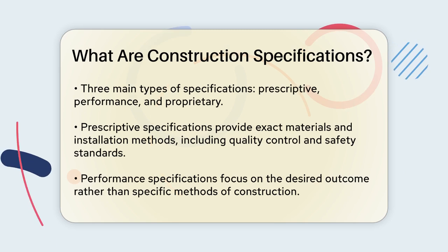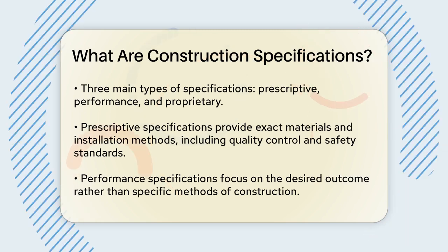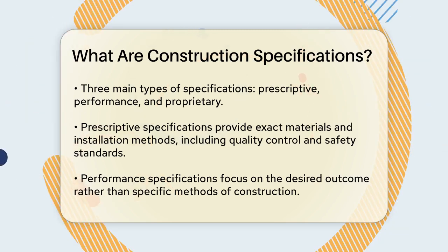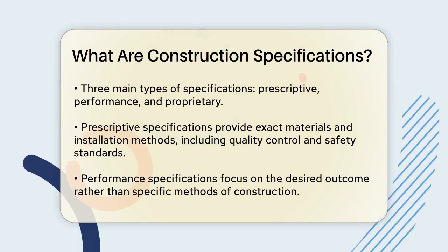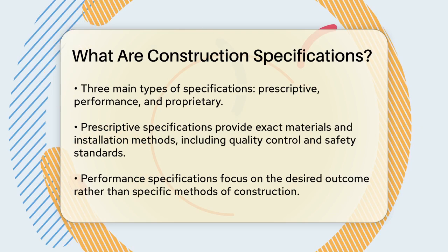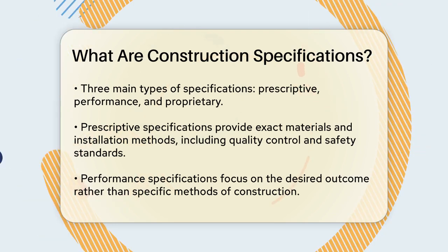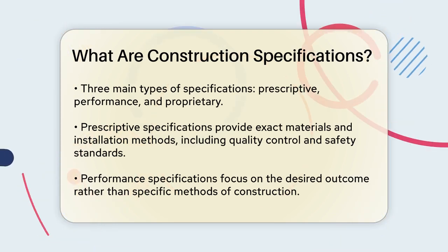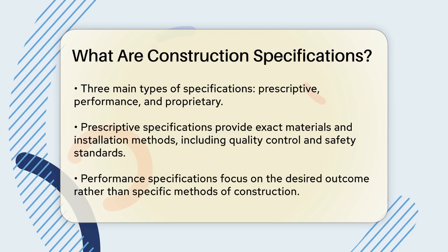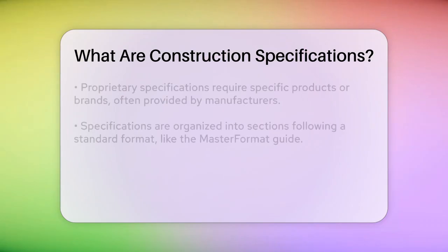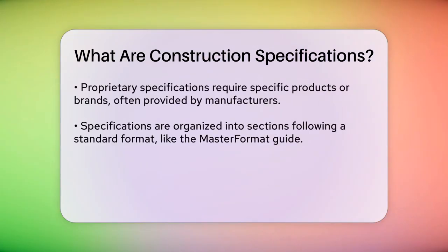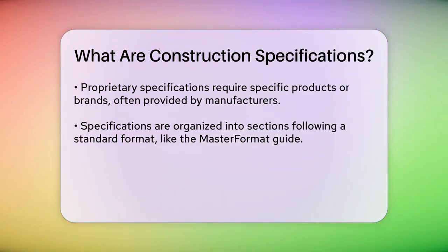Performance specifications, on the other hand, focus on the end result rather than the specific methods. They describe how the final product should function and look, but leave the details of how to achieve that up to the contractor. This type of spec is more about ensuring the project meets certain performance criteria, like acoustic or thermal requirements.